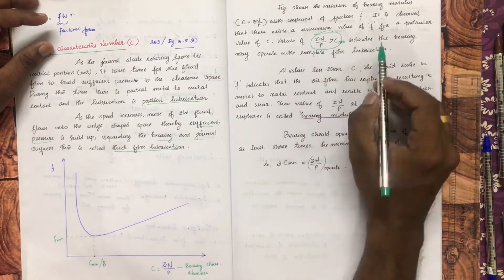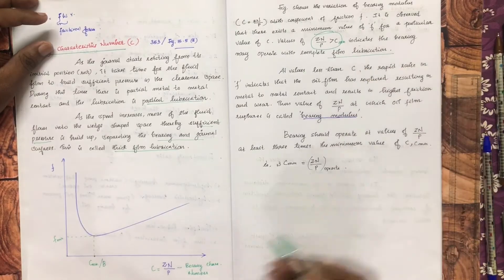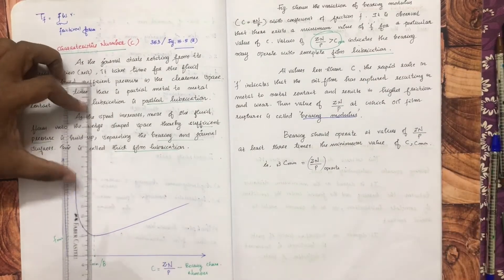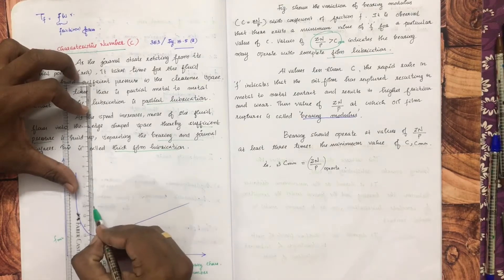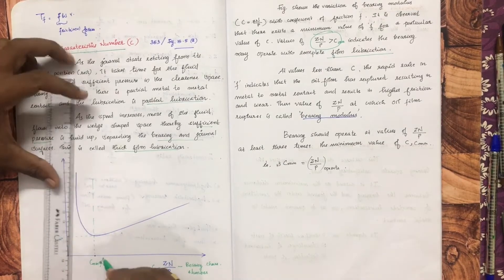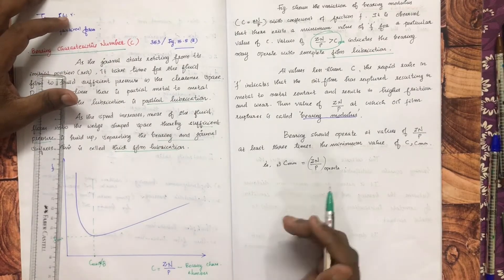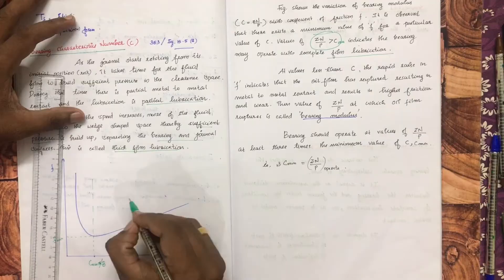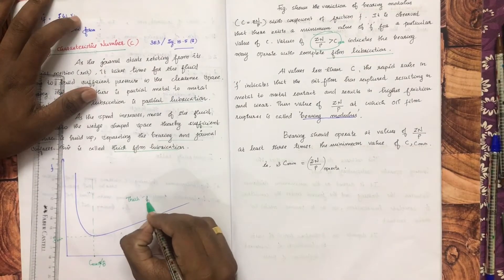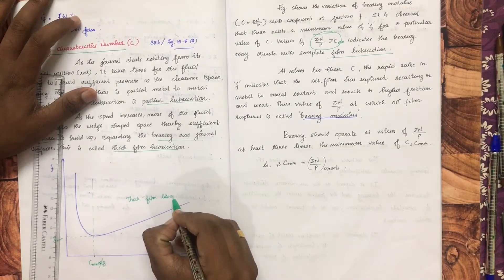This indicates the bearing may operate with complete film lubrication. This portion is the C minimum, also referred to as BM. Thick film lubrication means the journal is completely separated from the bearing surface.